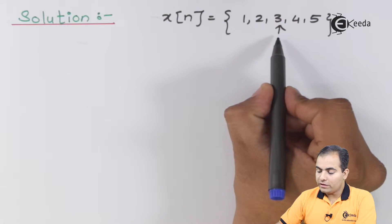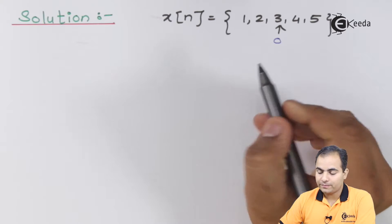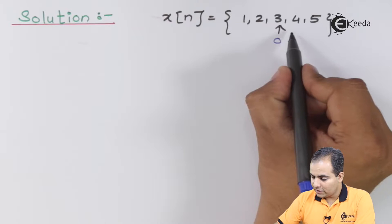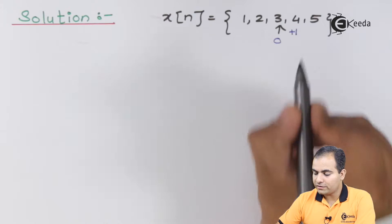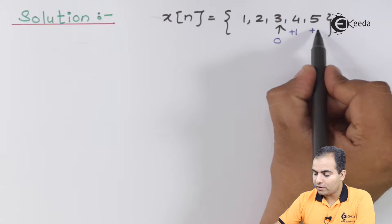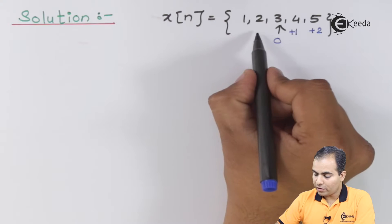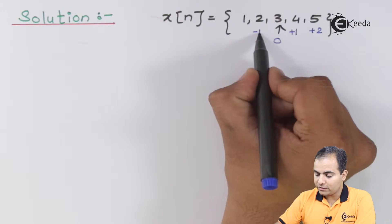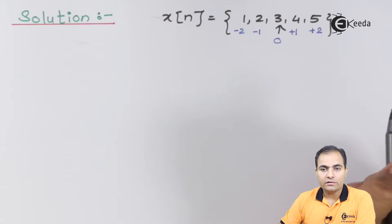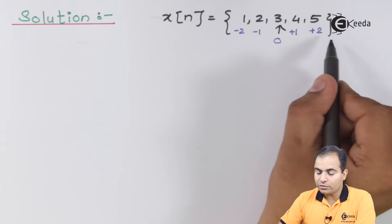The origin is placed perfectly at the center. On the right-hand side, positive instant 1 has amplitude 4, and positive instant 2 has amplitude 5. On the left-hand side, at minus 1 the amplitude is 2, and at minus 2 the amplitude is 1. This means our n value varies from minus 2 to plus 2.